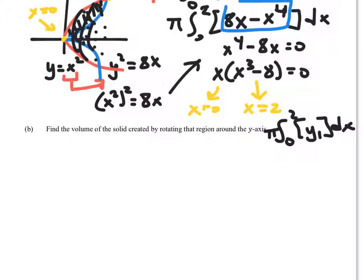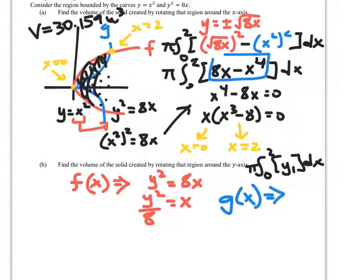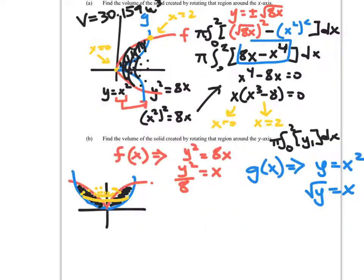Okay, so I've got to do a little bit of work here. I've got to get x all alone. So, f used to be, what is it, y squared over, excuse me, y squared equals 8x. I want to solve for x, so I get y squared over 8. Okay, and for g(x), g(x) was y equals x squared. So now, g would be the square root of y equals x.